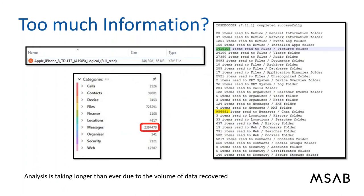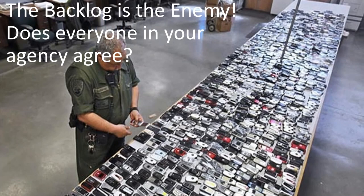Not only are the number of devices and their size increasing — your resulting data is getting larger too. A 3.46 gigabyte XRY file from a 256 gig phone contained 1.4 million pictures and 2.39 million chat messages. This is what forensic examiners, investigators, and intelligence analysts are dealing with: the huge amount of data and how to parse through it. The backlog is the enemy. It slows down investigations and prosecution, frustrating stakeholders and indicating a need for more efficiency in procedures.